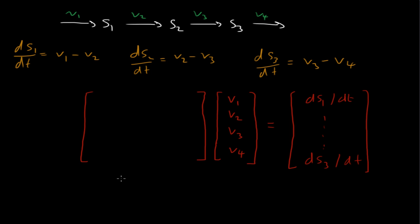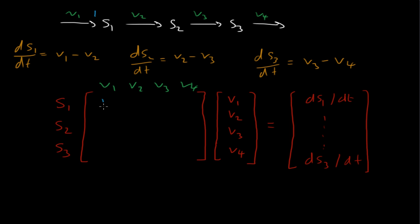I've separated these equations into three components: this matrix, which will contain the stoichiometric coefficients; a rate vector; and a rate of change vector. I'm going to label the rows S1 to S3 and the columns V1, V2, V3, V4. The stoichiometric coefficient of S1 with respect to V1 is 1, so I put a 1 there. S2 and S3 are not involved in V1, so they get zeros.